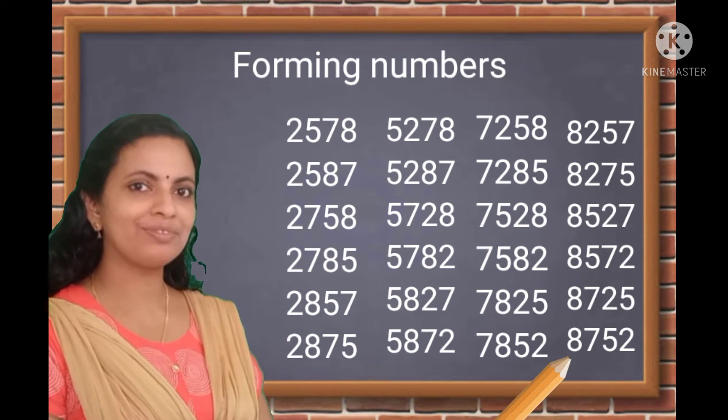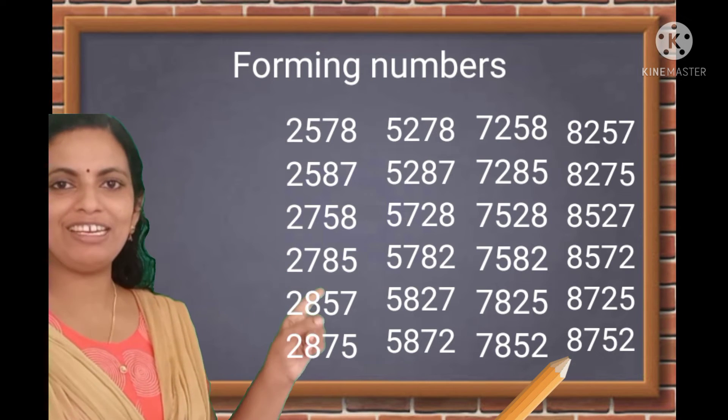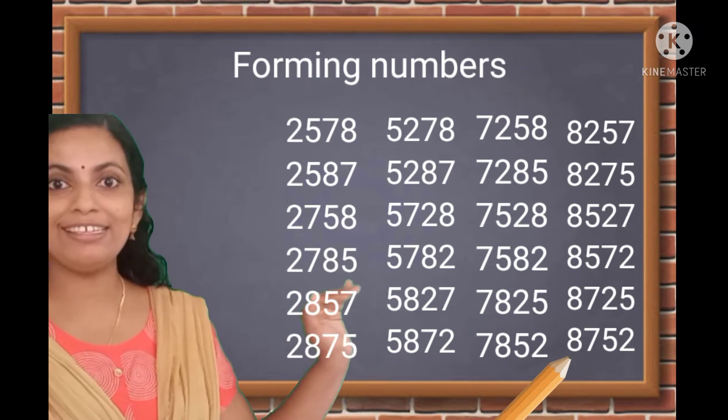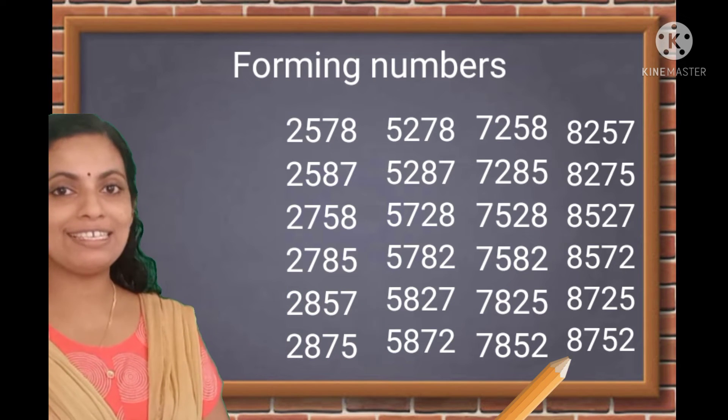Now, look at the biggest number. 8752. The digits are arranged in descending order.